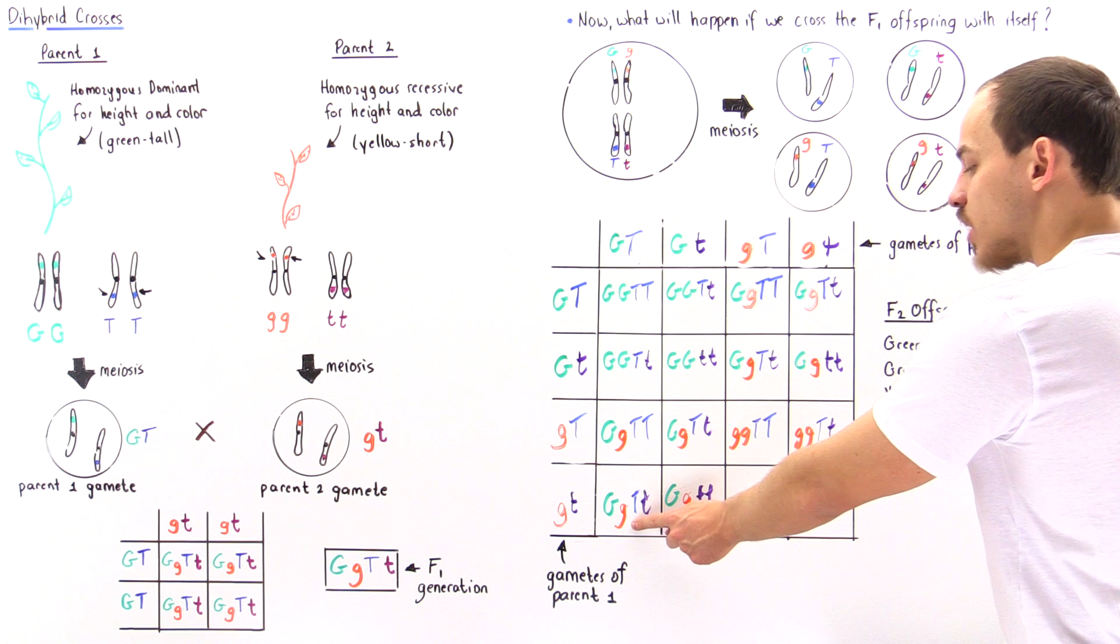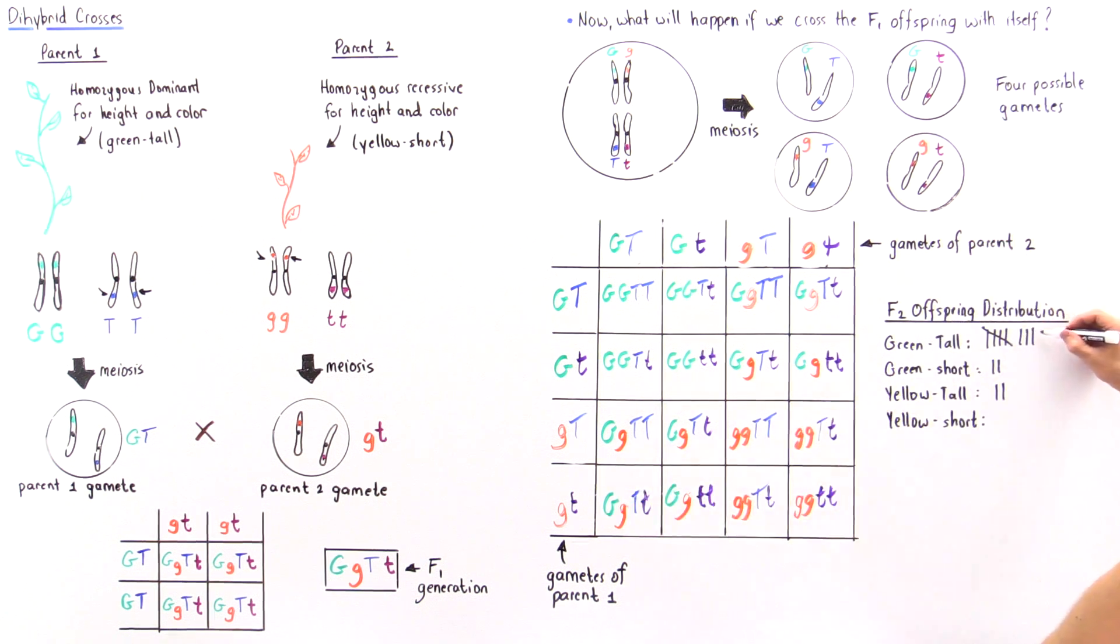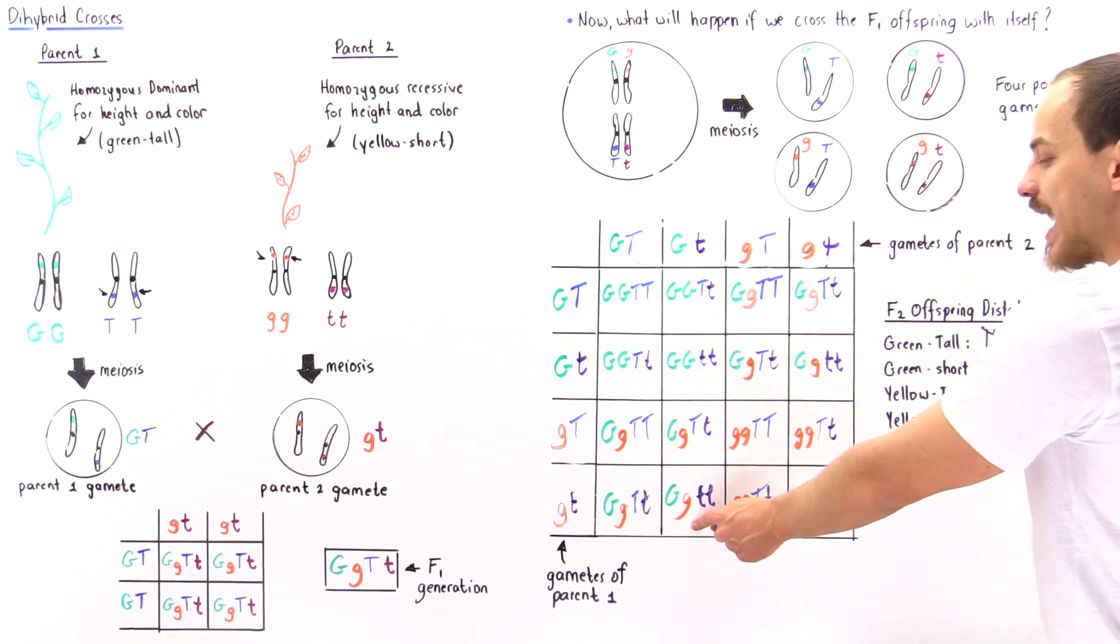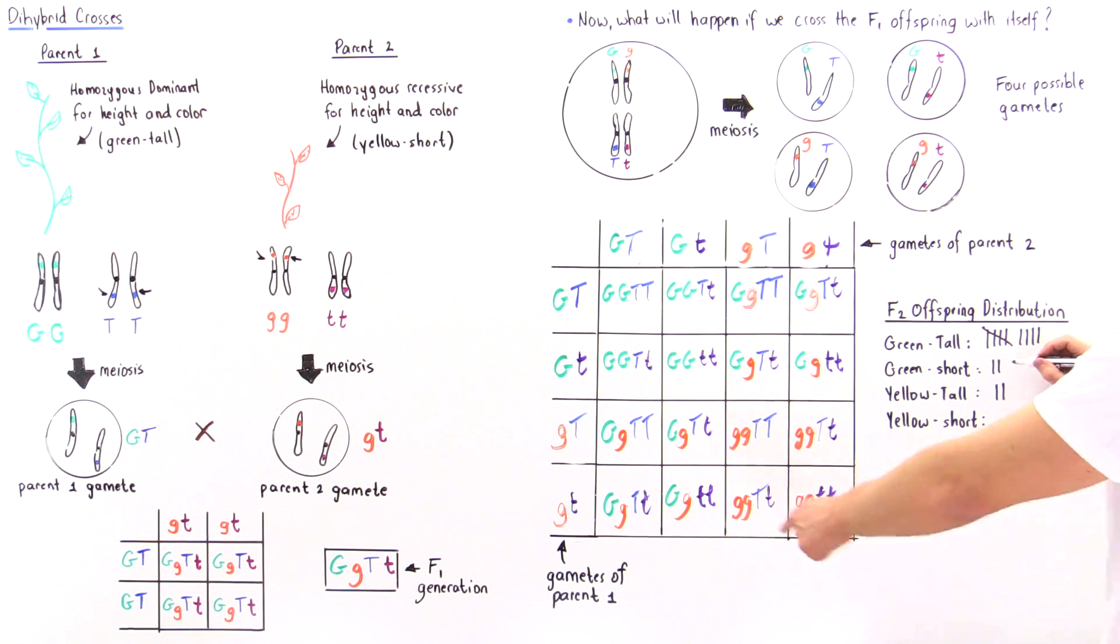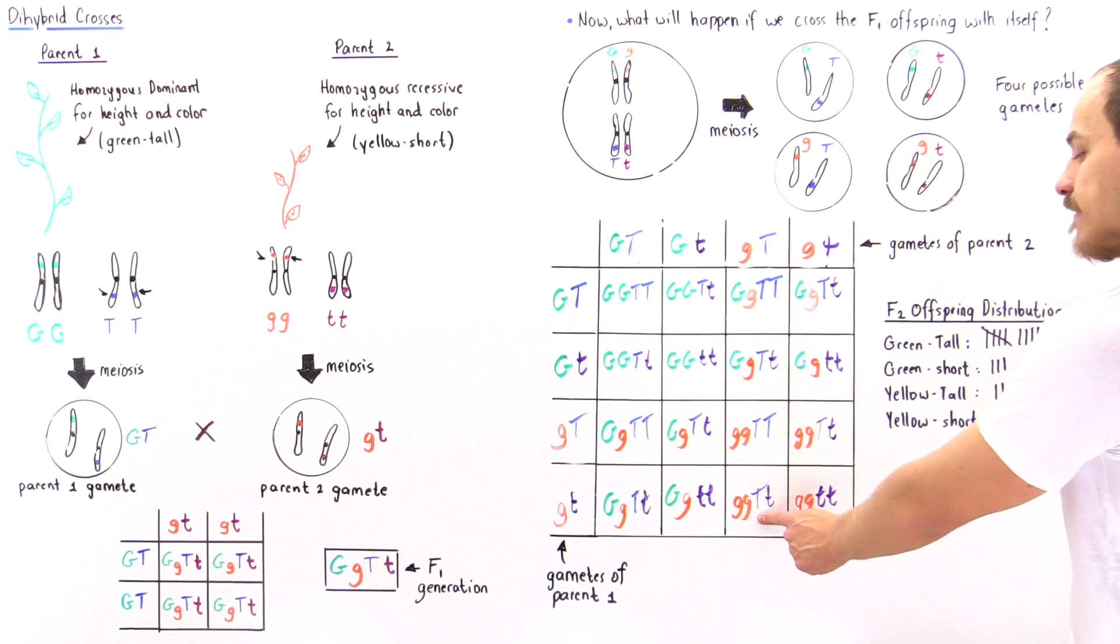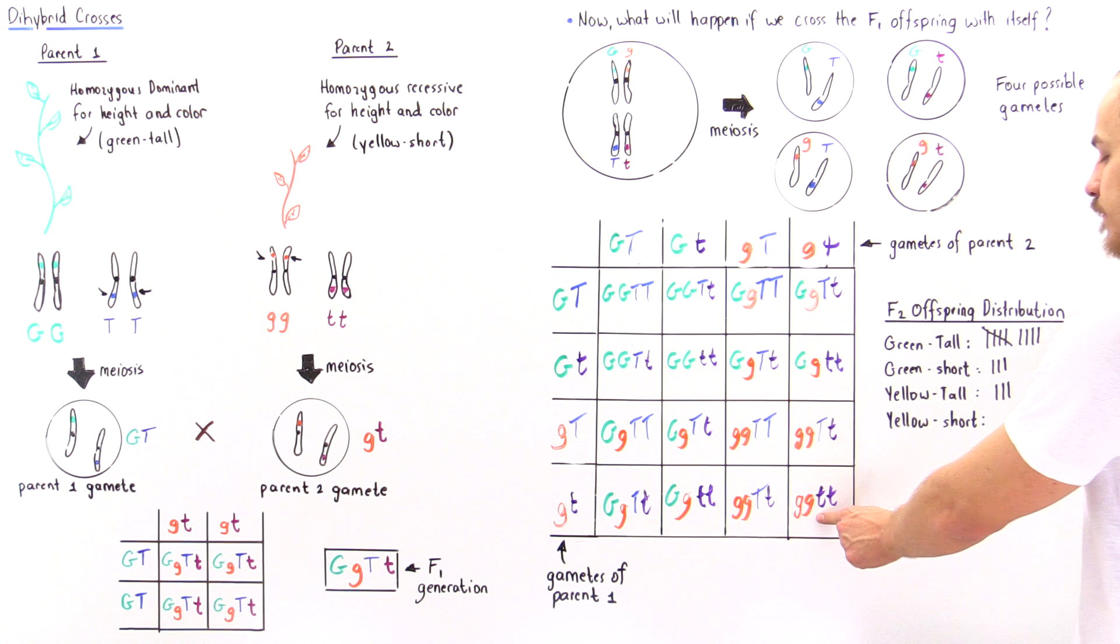Now we have yellow and tall, so one here. Once again we have yellow and tall. Here we have tall and green, so we have one more here. Here we have green and short, so we have green and short. Here we have yellow and short, and finally we have yellow here, we have yellow and tall, and here we have yellow and short. So we see that we have nine here.